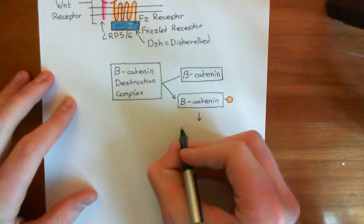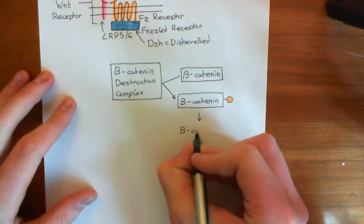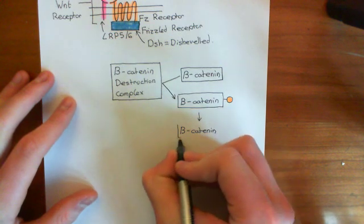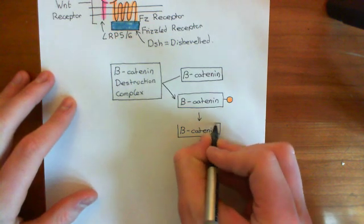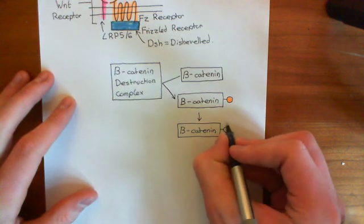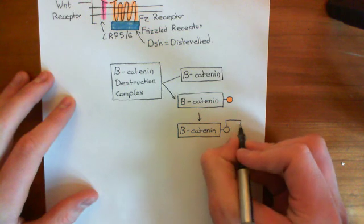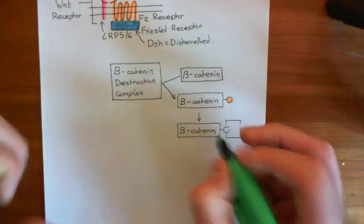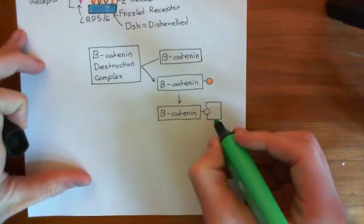The beta-catenin destruction complex targets beta-catenin for ubiquitination by putting this group on. What happens now is that beta-catenin is ubiquitinated. Proteins which have ubiquitin added onto them, which is what ubiquitination means, end up being targeted for degradation by the proteasome. Here I'm adding on ubiquitin, this great big green structure.